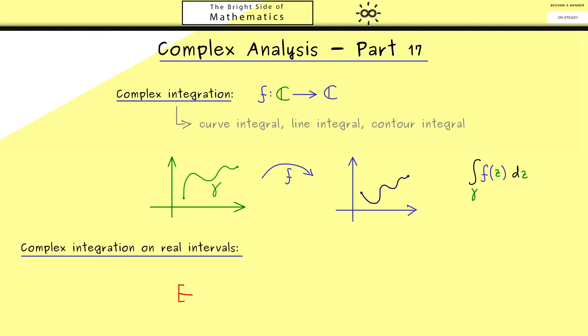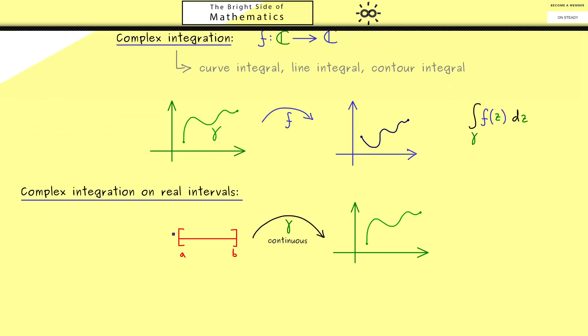Now the picture from above looks much simpler because it means that we want to map a real interval from a to b into the complex plane. And moreover we just consider continuous maps. And indeed I also want to call this map lowercase gamma. Therefore you should see this is actually the first step from the picture above. However now I want to concentrate just on this picture here.